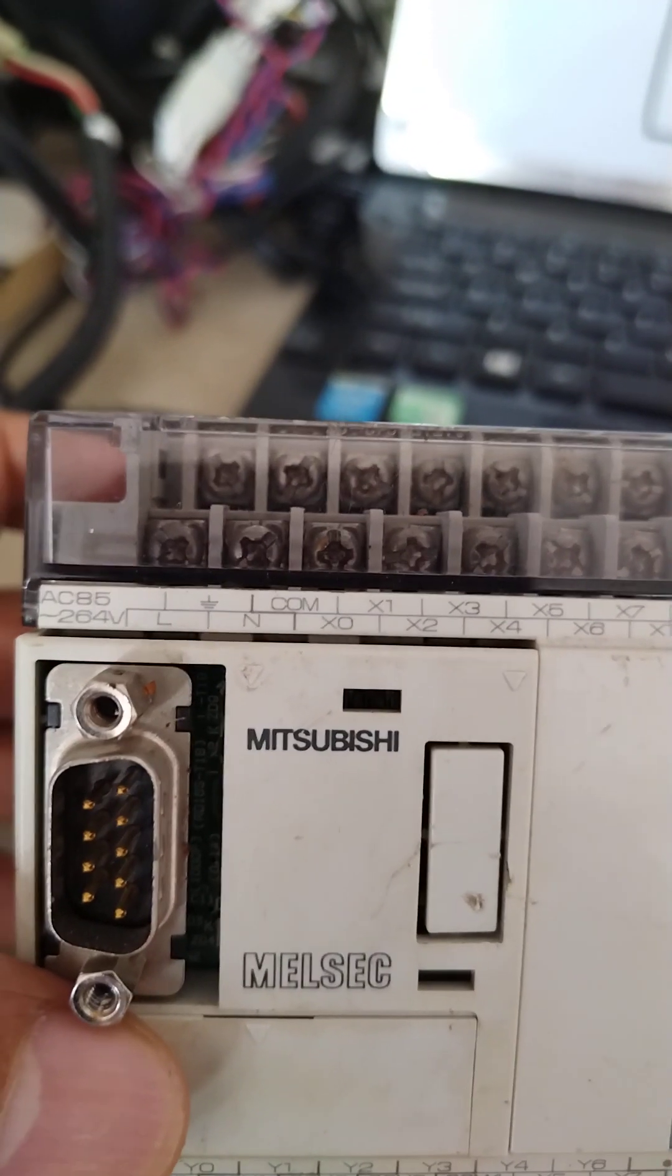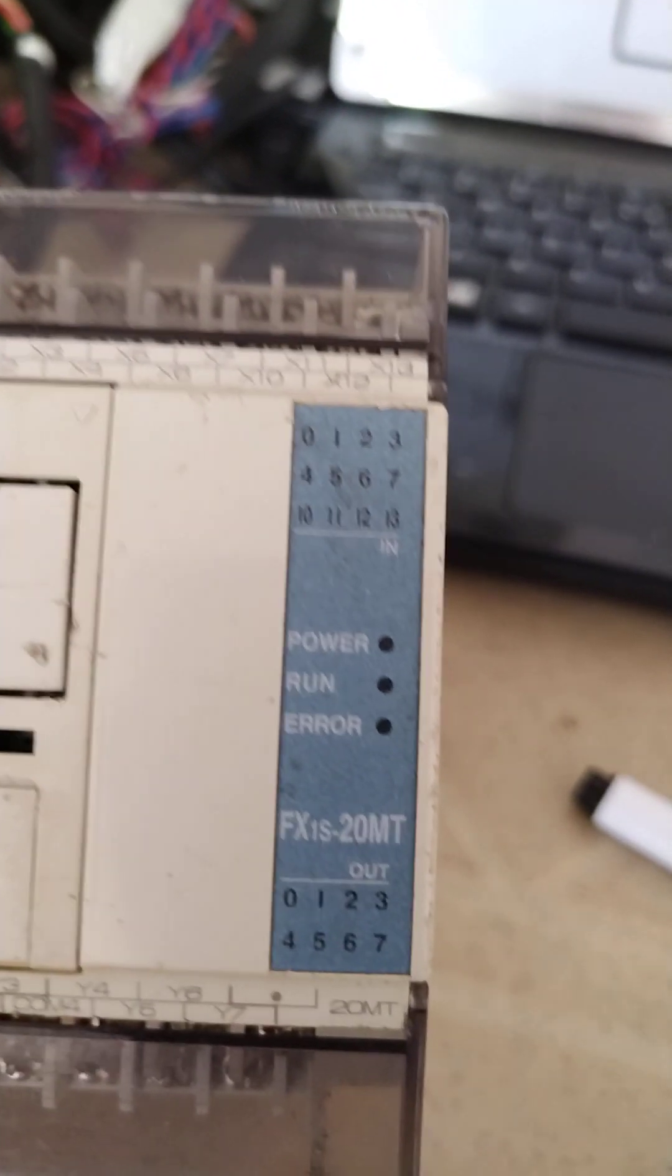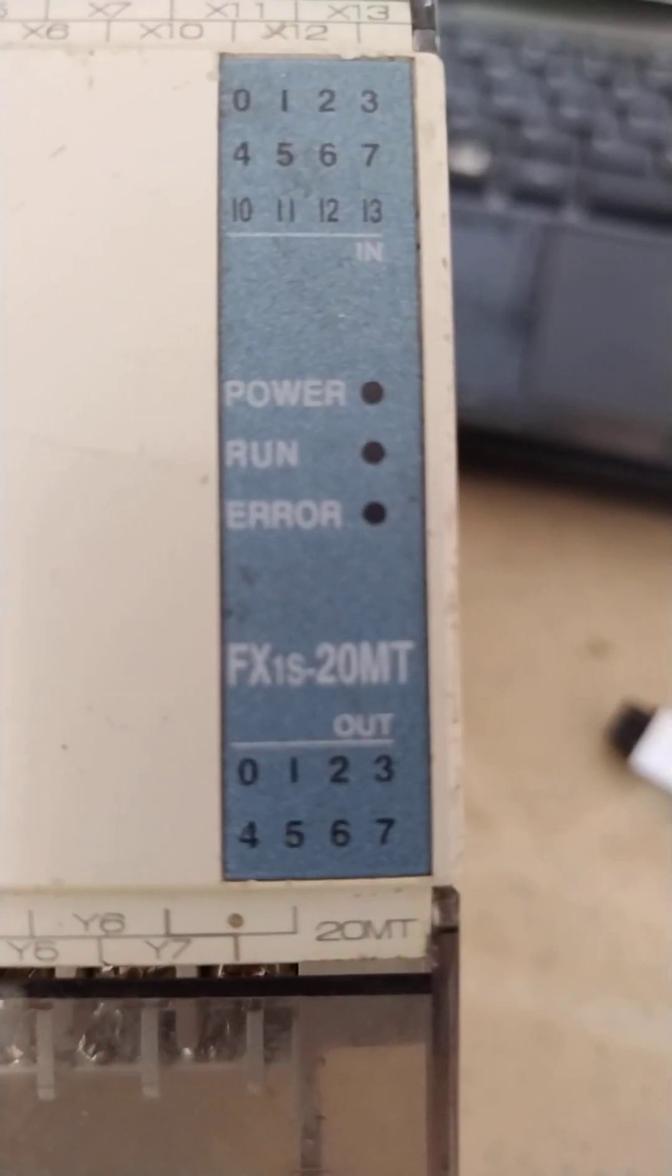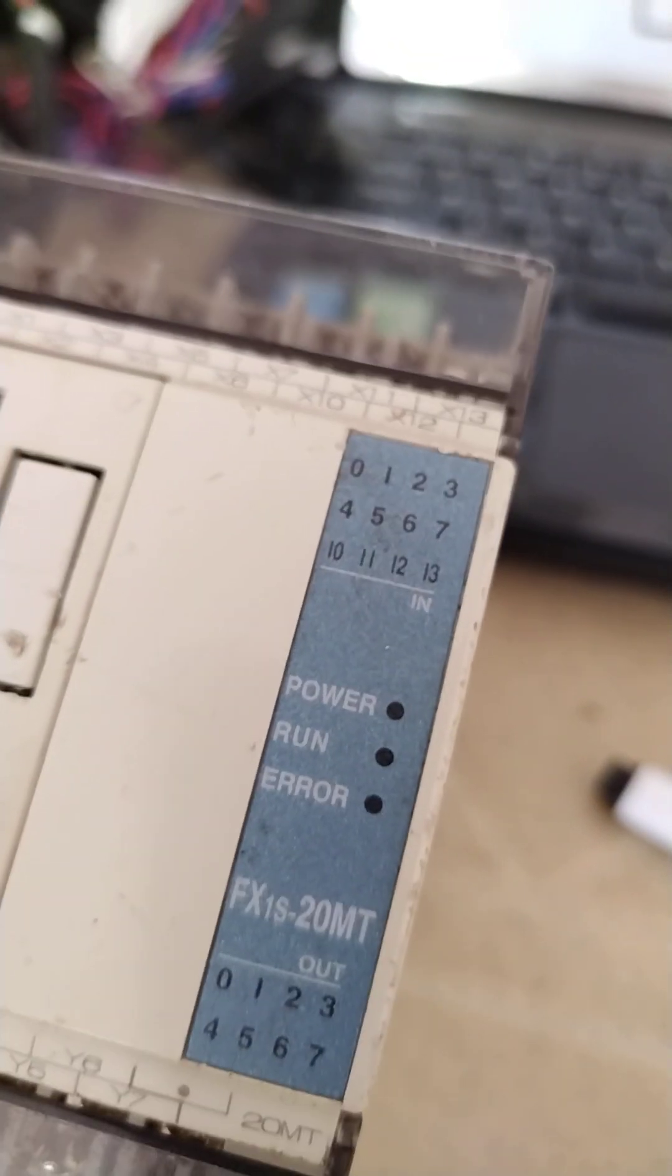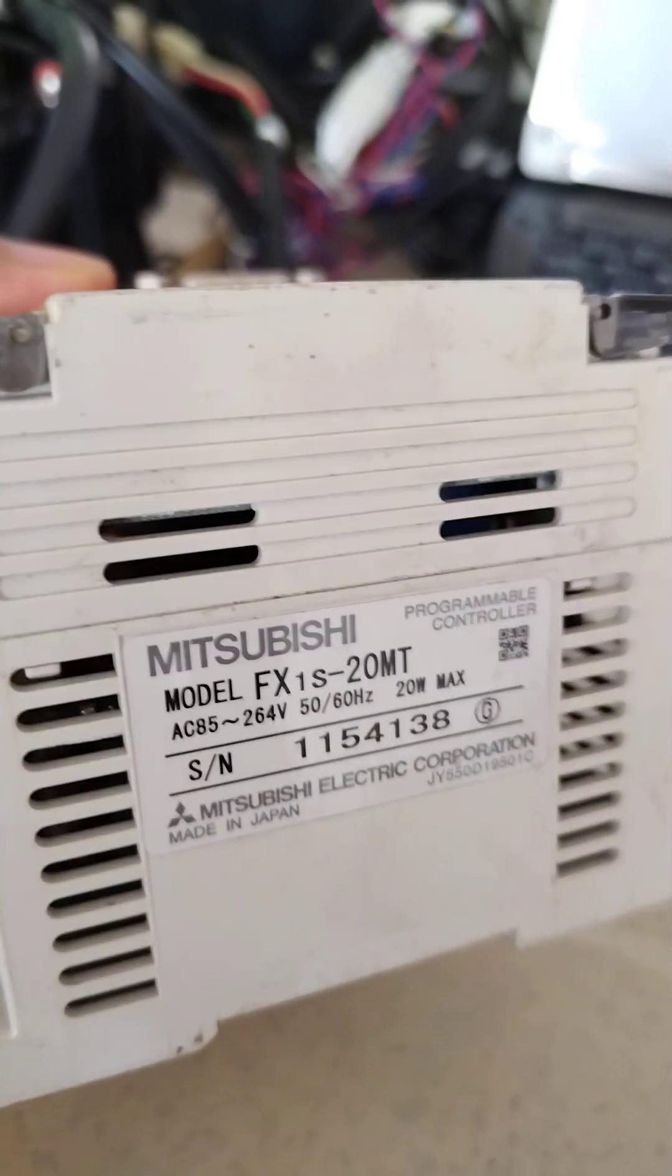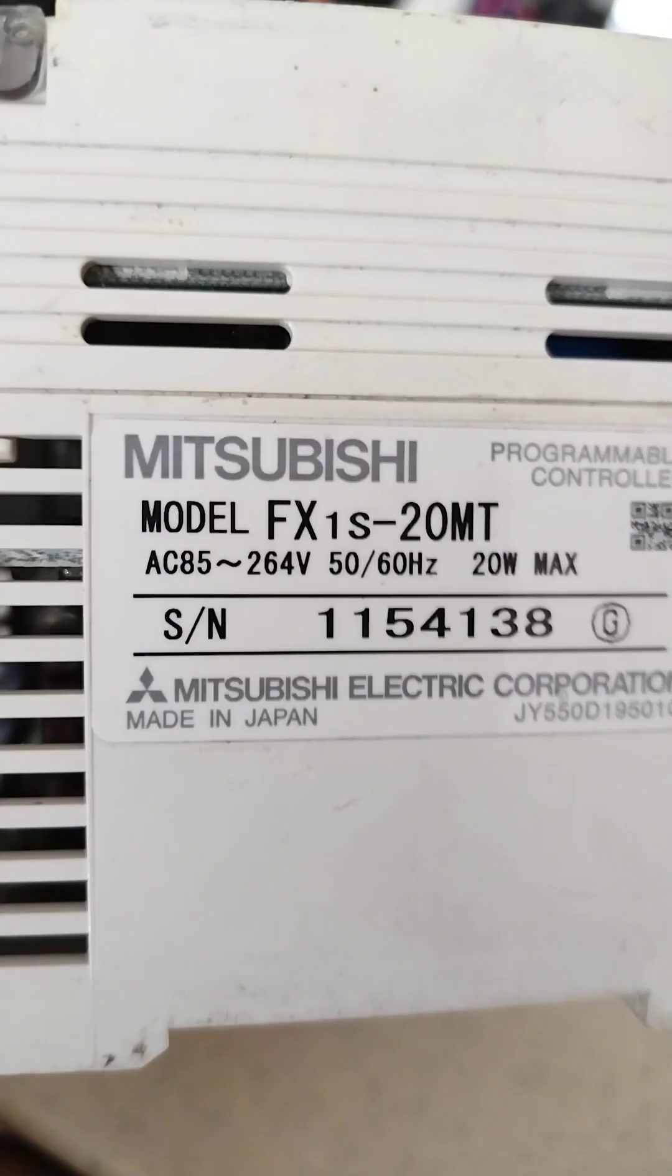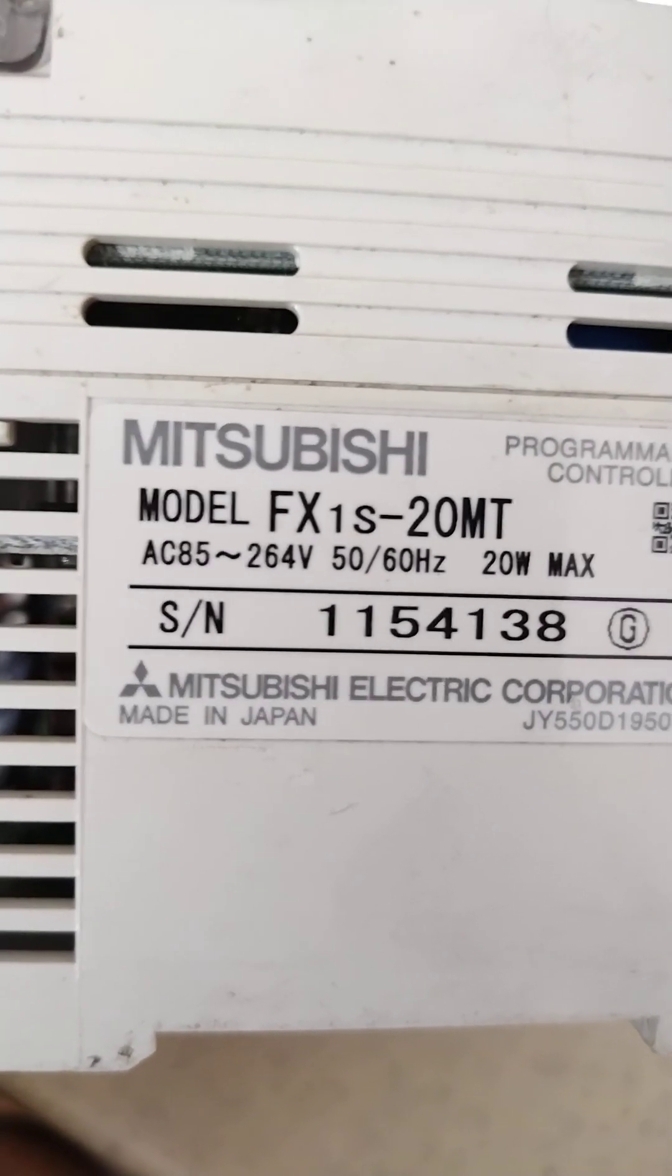Okay, now first of all you need to know what is the model - FX1S-20MT. Now actually you need to check if your PLC is made in Japan. As you can see here, this is made in Japan.